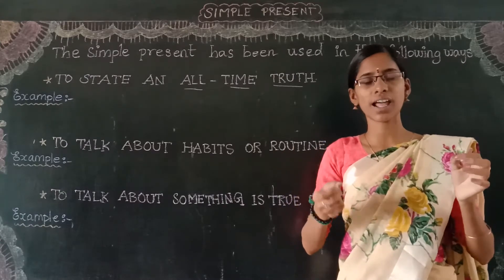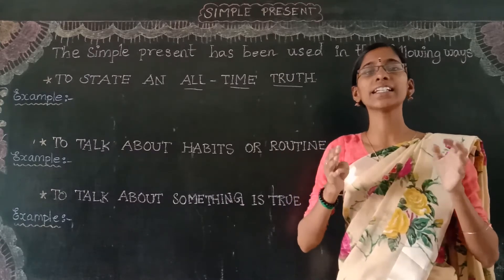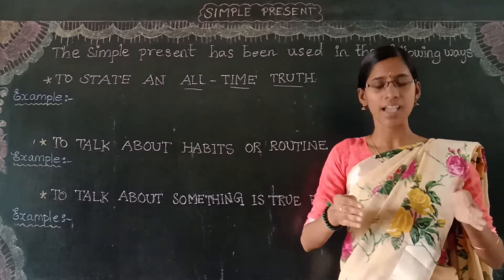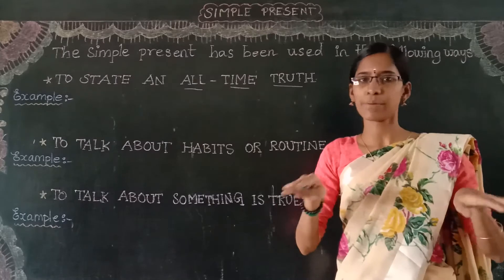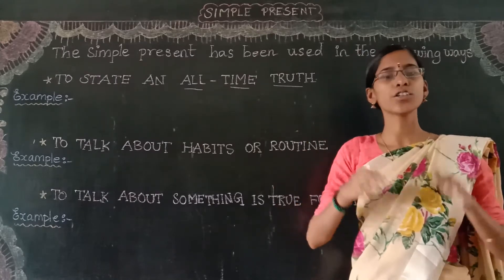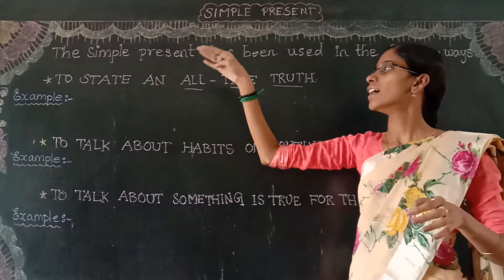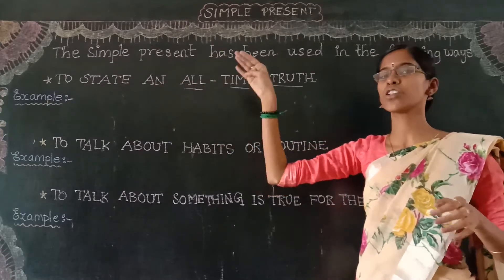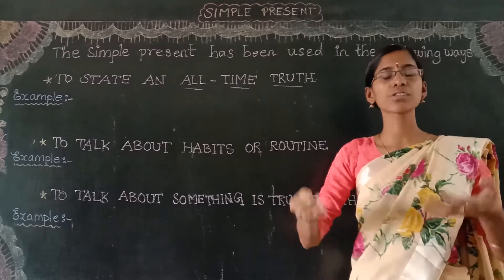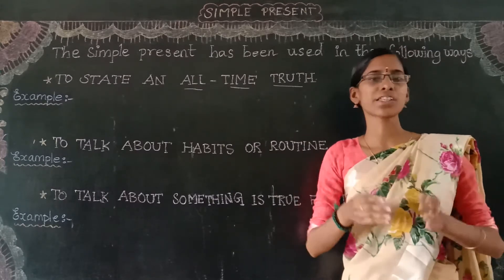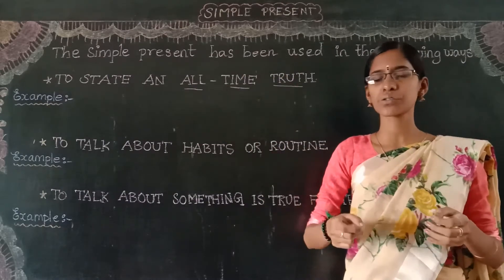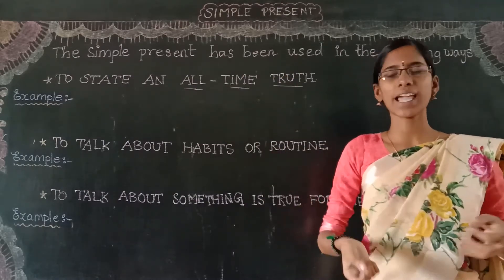A universal truth is something common to all and it cannot be changed. For example, the sun rises in the east — it is common and it never changes. So while you are writing or speaking about a universal truth or all-time truth, you can use simple present tense. This is our first rule, and we will see some examples.